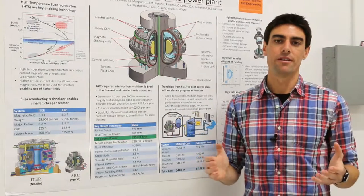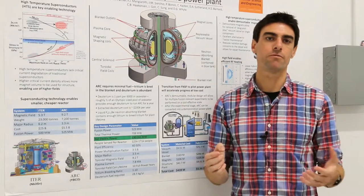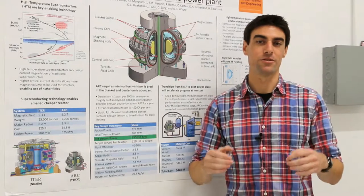In the last 50 years, scientists have found that the amount of fusion power that you can get out of a tokamak scales roughly as the volume, or the size of the device, times the fourth power of the magnetic field. And so that's huge.